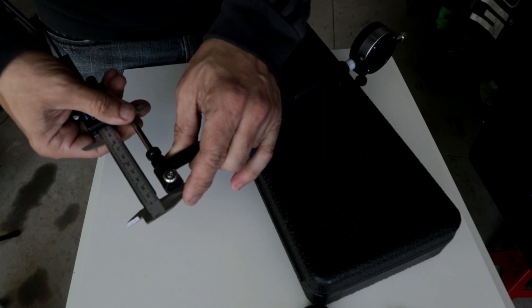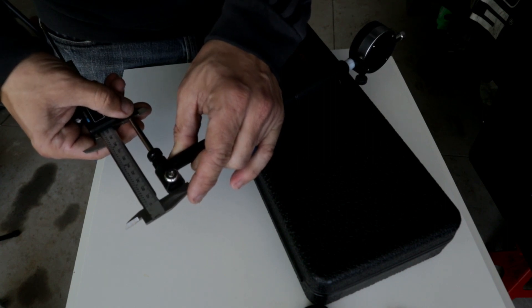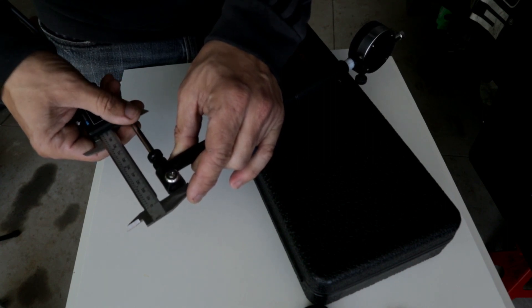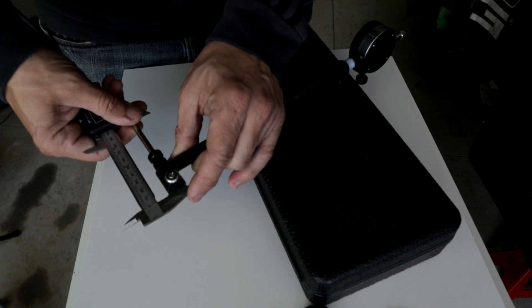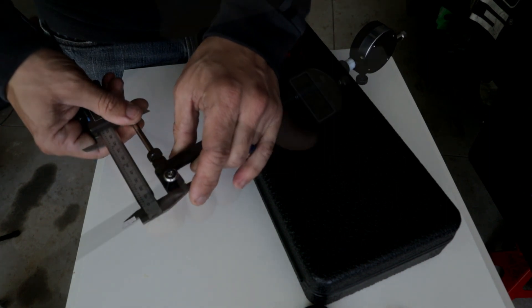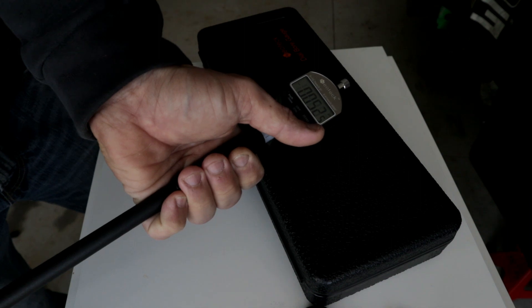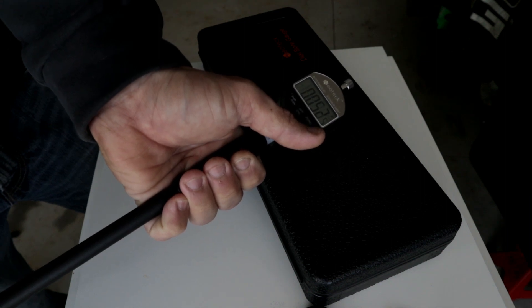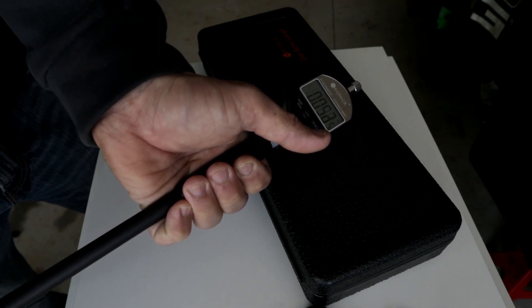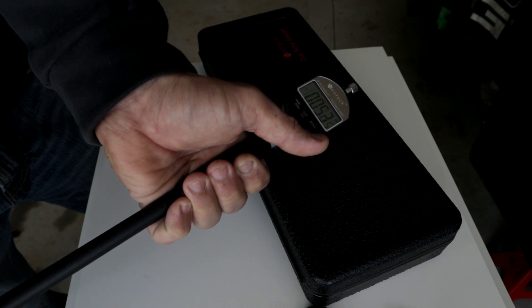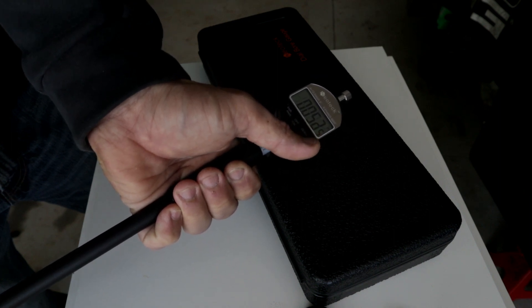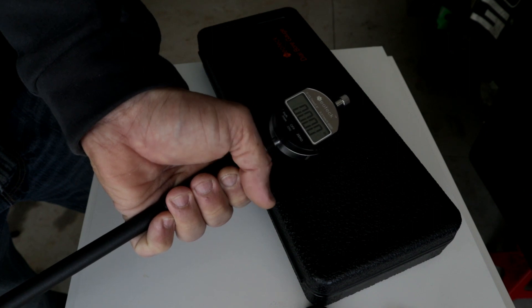Once you got it in place, you want to find the highest number because based on the angle, it is going to give you a different number. You don't want to be inaccurate with this. So once you find the highest number, you are going to zero your dial bore gauge.